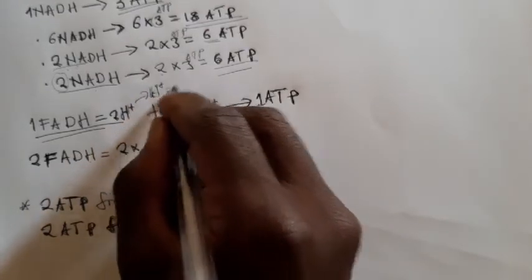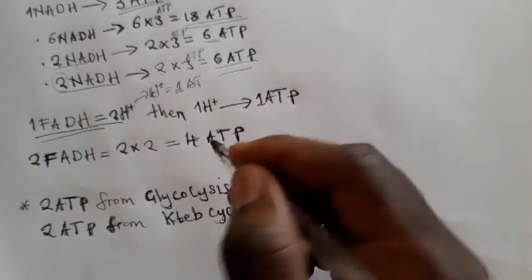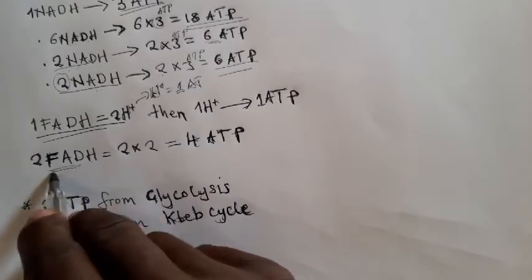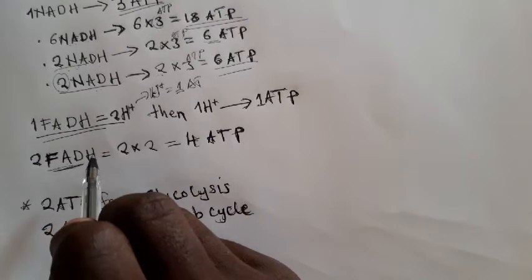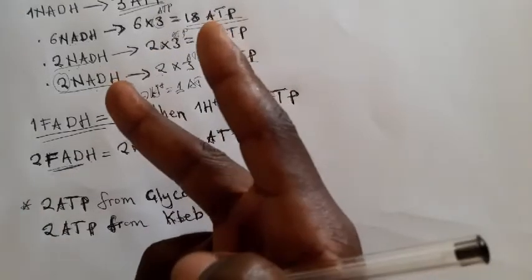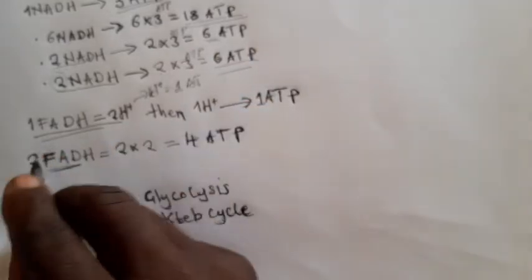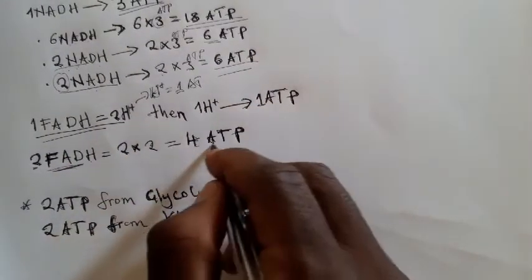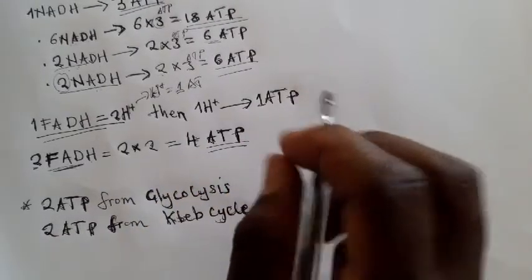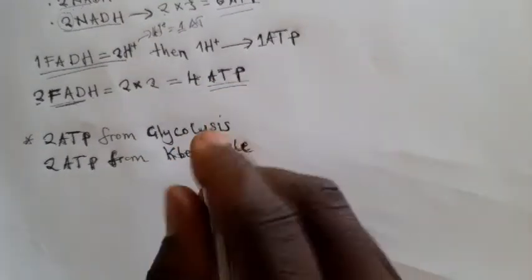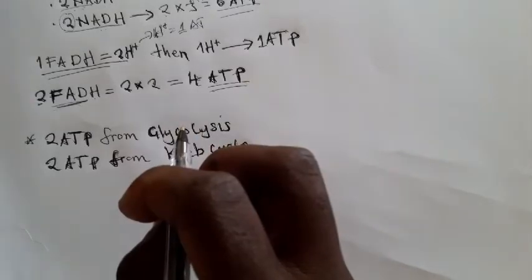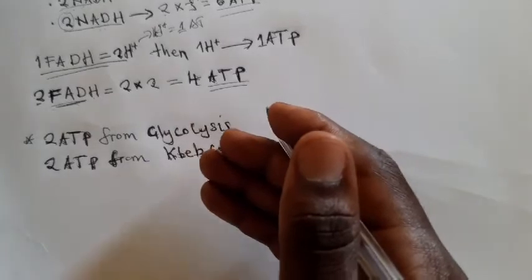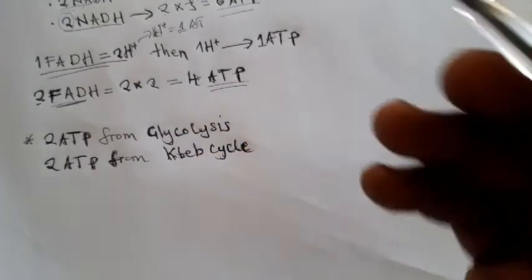Since each hydrogen ion produces 1 ATP, one FADH2 producing 2 hydrogen ions gives 2 ATP. With 2 FADH2, that is 2 times 2 which equals 4 ATP. Additionally, 2 ATP come directly from glycolysis and another 2 ATP come directly from the Krebs cycle.